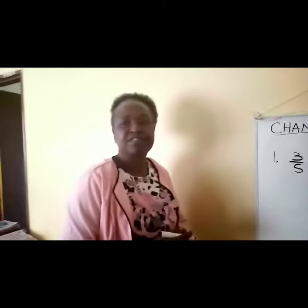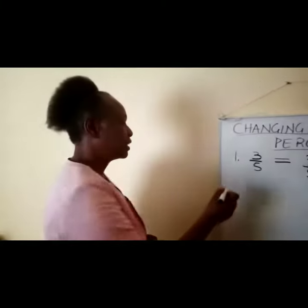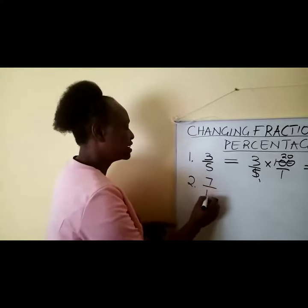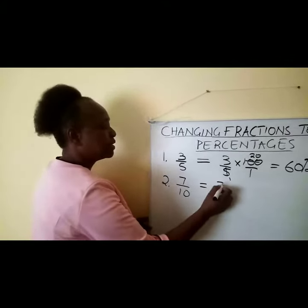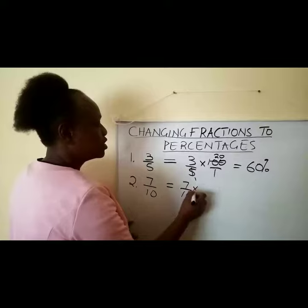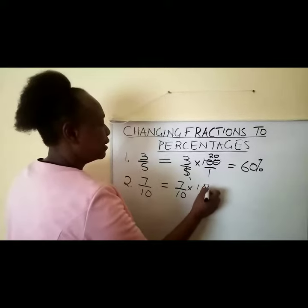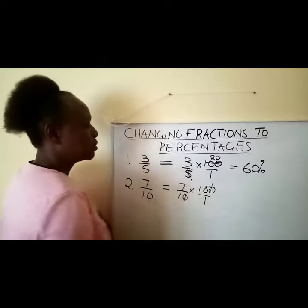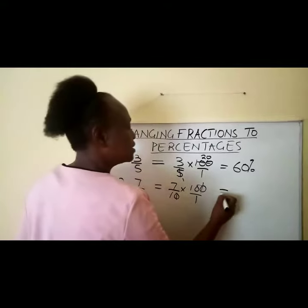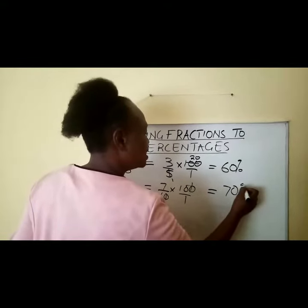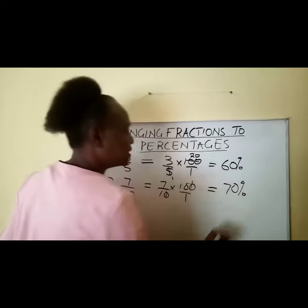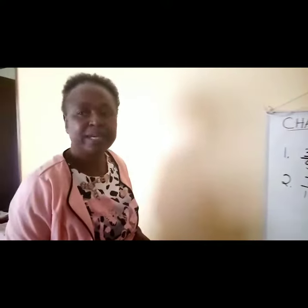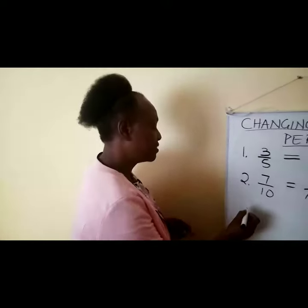Taking another simple example, we have 7 over 10. It is the same thing: 7 over 10 multiplied by 100 over 1. We can also divide by canceling. This gives us 70%.